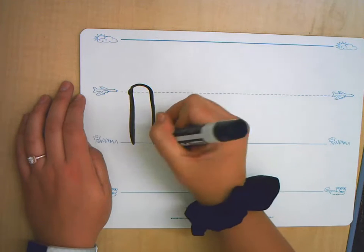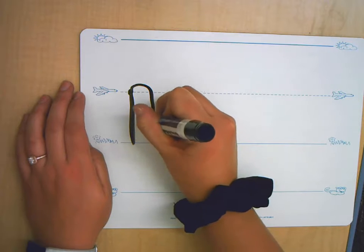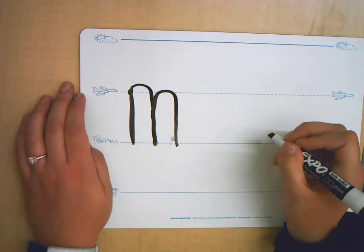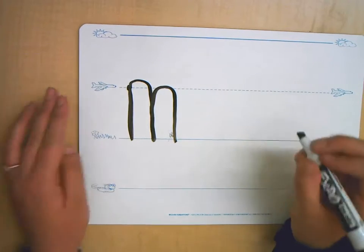Then that's just like the letter N, right? So you're going to go back up and make another hump. Man, my handwriting is not very good but yours is probably going to be a lot better than mine, right?